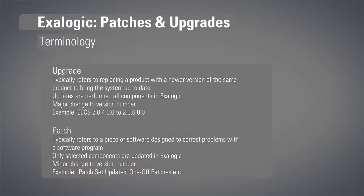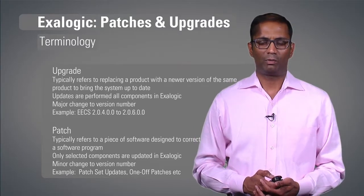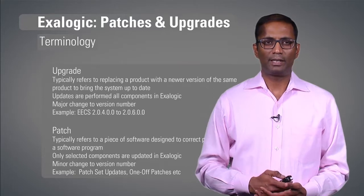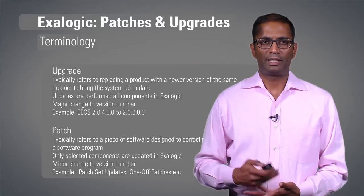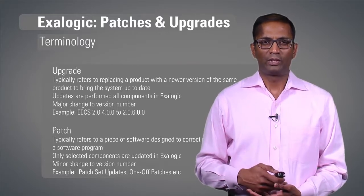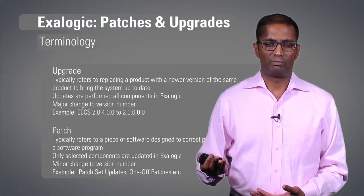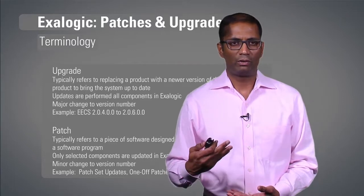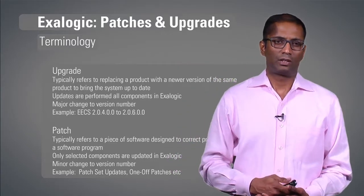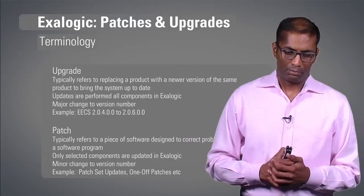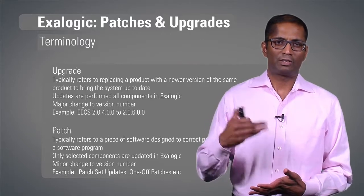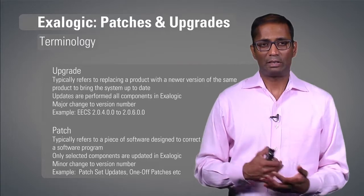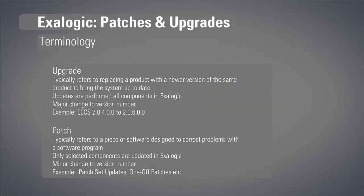Let's look at some of the terminology for patches and upgrades. We get asked this question all the time: how do you differentiate an upgrade from a patch? An upgrade is replacing a product with a newer version and bringing it up to date — updates are performed across all Exilogic components. We do an upgrade when we go from one major version to another, for example from 20400 to 20600. A patch, per the Wikipedia definition, refers to a piece of software designed to correct a problem. When we ship patches, not all components are updated — only a few, like a monthly PSU or quarterly PSU. Version number changes are minor — PSUs, one-off patches, those are patches.